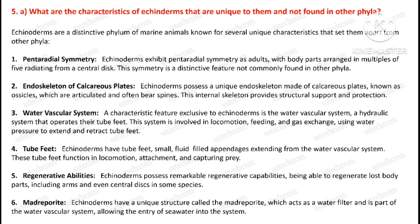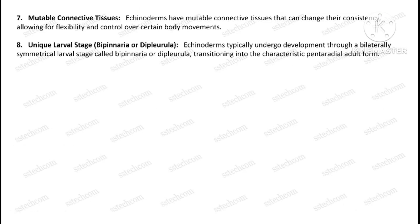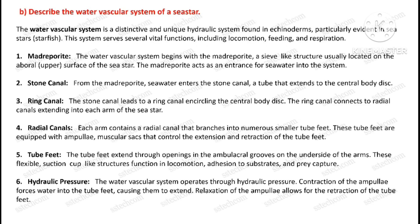Question number five, part A: What are the characteristics of echinoderms that are unique to them and not found in other phyla? Part B: Describe the water vascular system of a sea star.